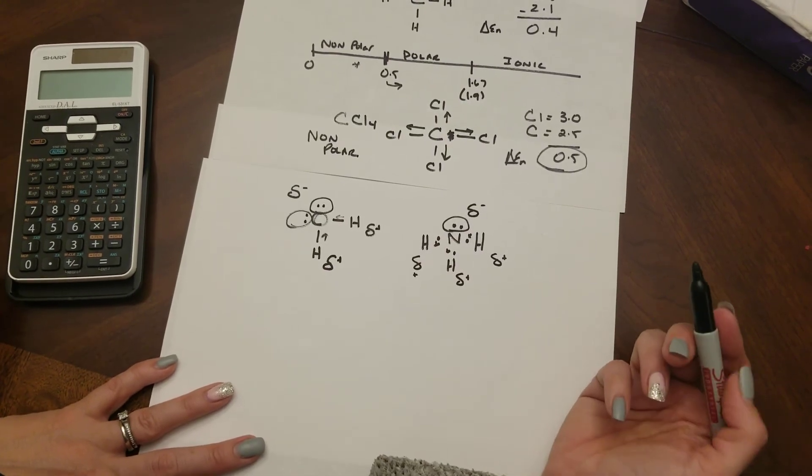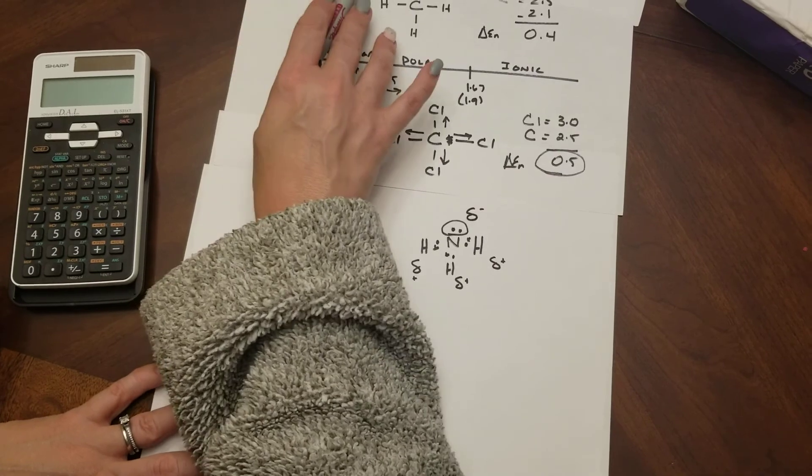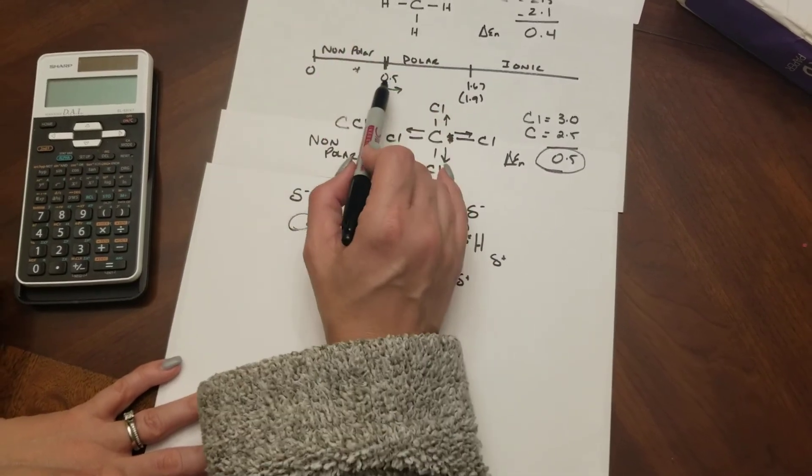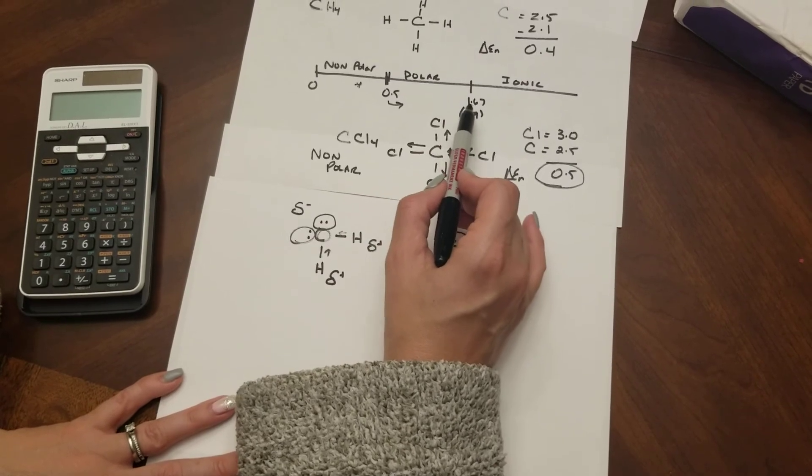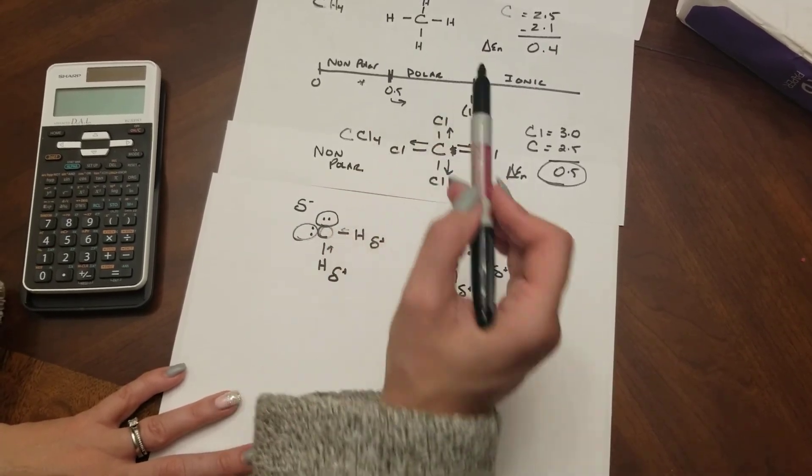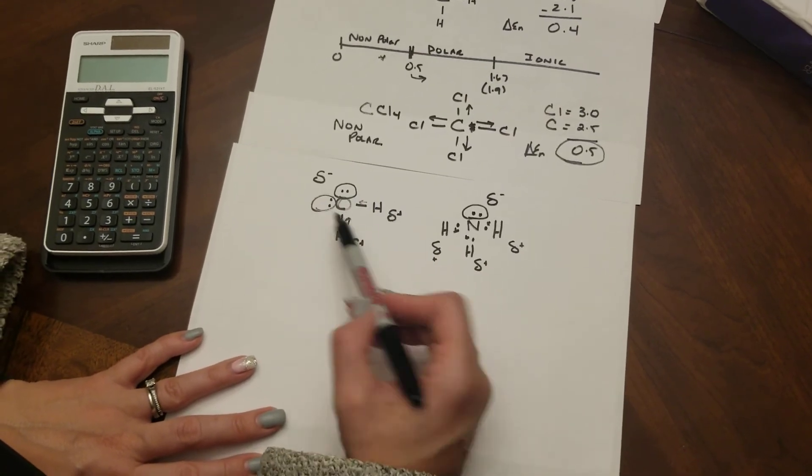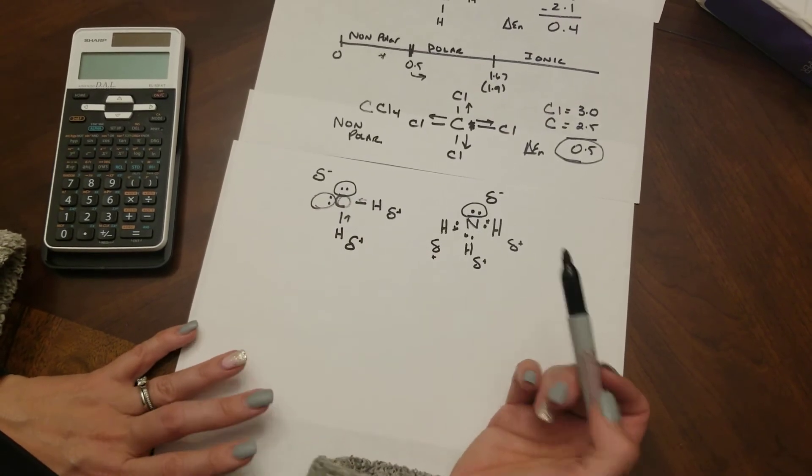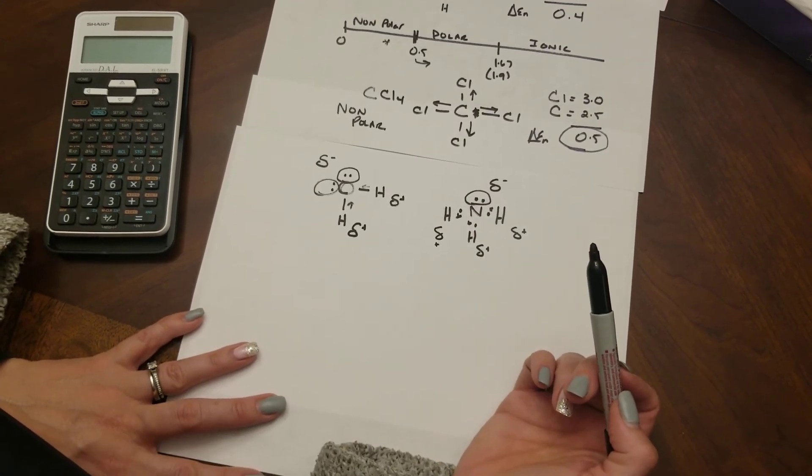So our first step when we're trying to decide polarity is check your electronegativities and subtract. If you get a number between 0.5 and about 1.6 it's going to be a polar molecule but then think of the shape. If there is a pair of electrons that is not used in bonding that is an unpaired set of electrons then the molecule might itself be polar.